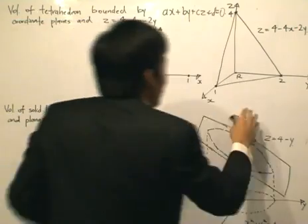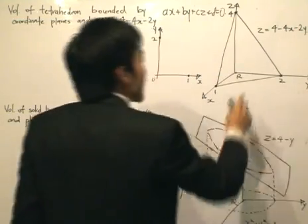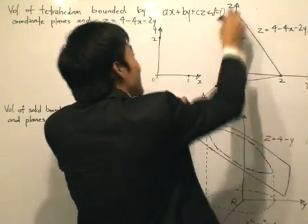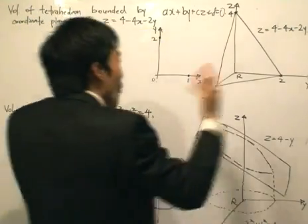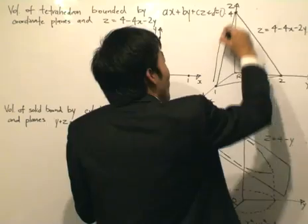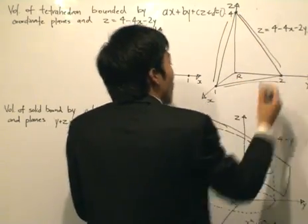Set z equals zero, we got the x and y coordinate plane. And set y equals zero, we got the x and z coordinate plane. So what we want to do is that we want to find this volume that we have right here, this volume that we have.